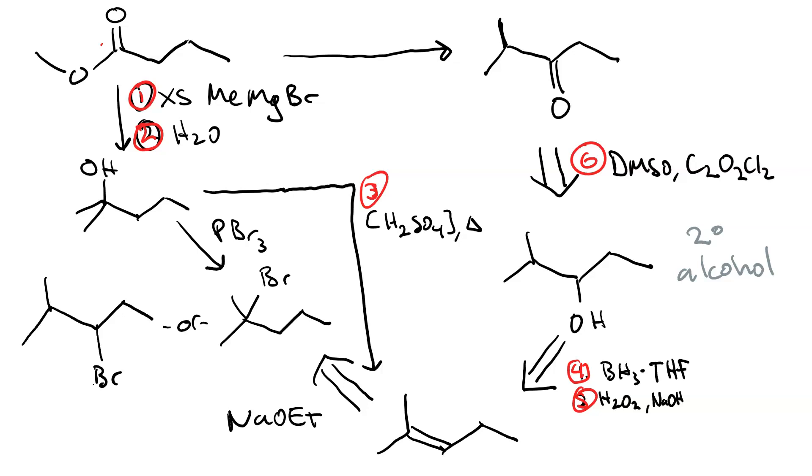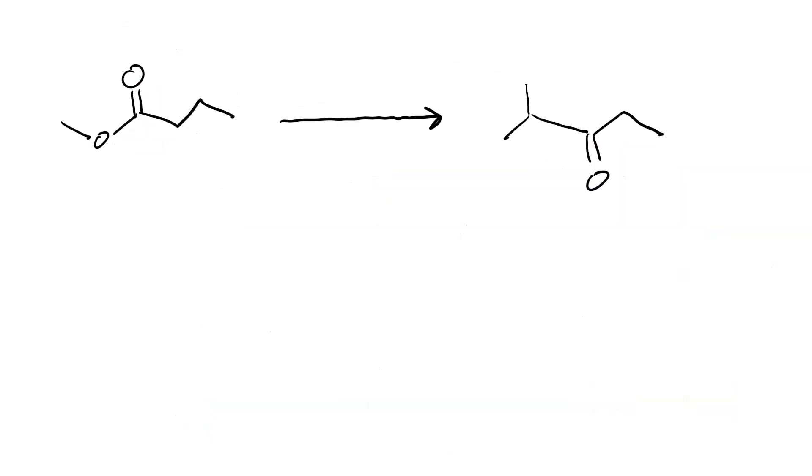Alternatively, we could go make our third step, the PBr3 and our fourth step, sodium ethoxide. And then, hydroboration would be 5, oxidation would be 6, and the Swern oxidation would be 7. So, here's the 6-step synthesis.